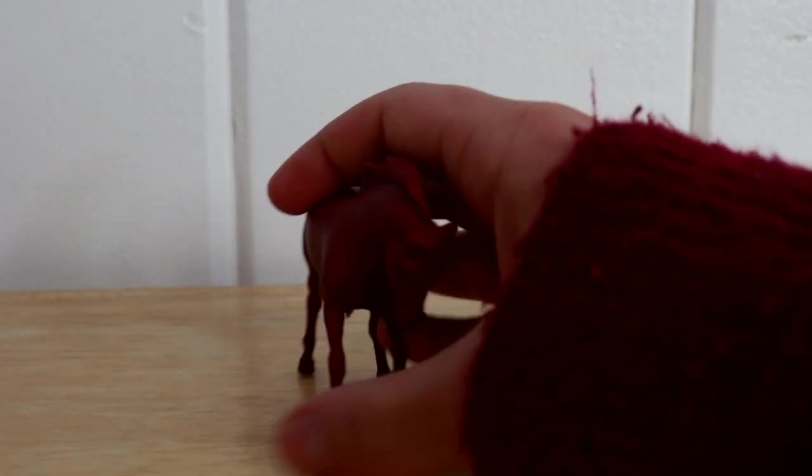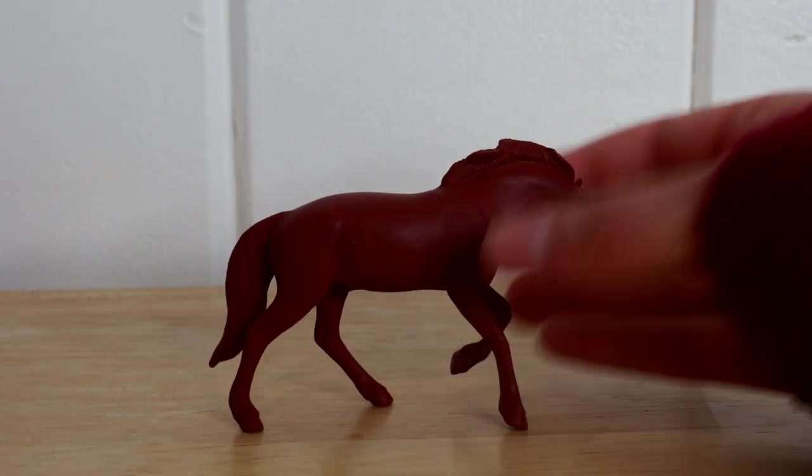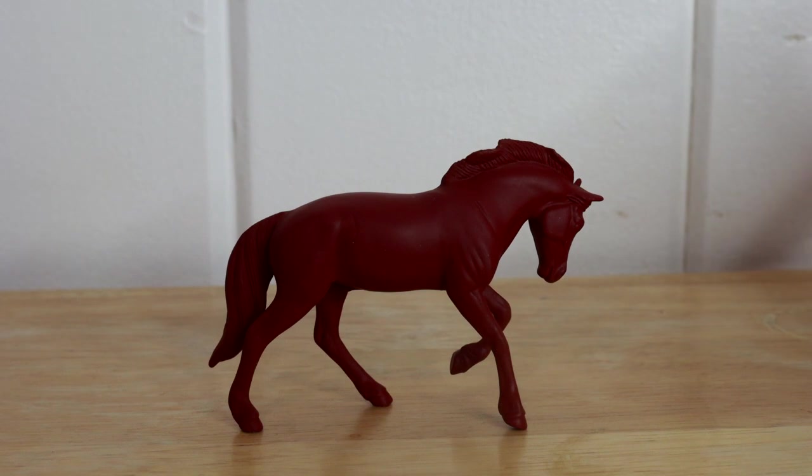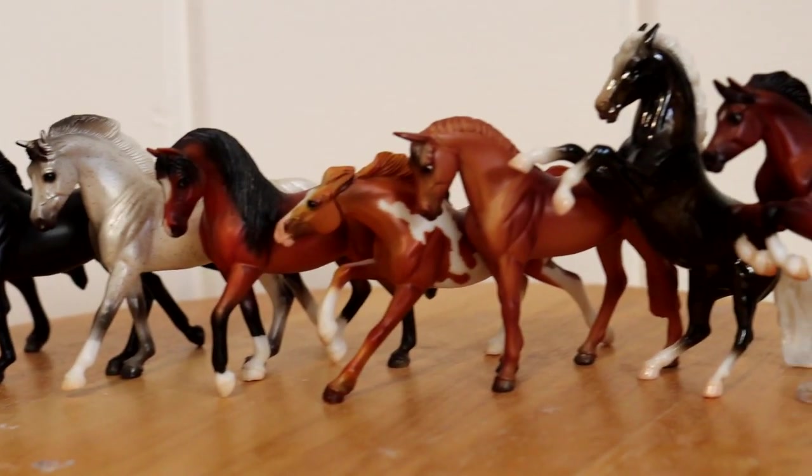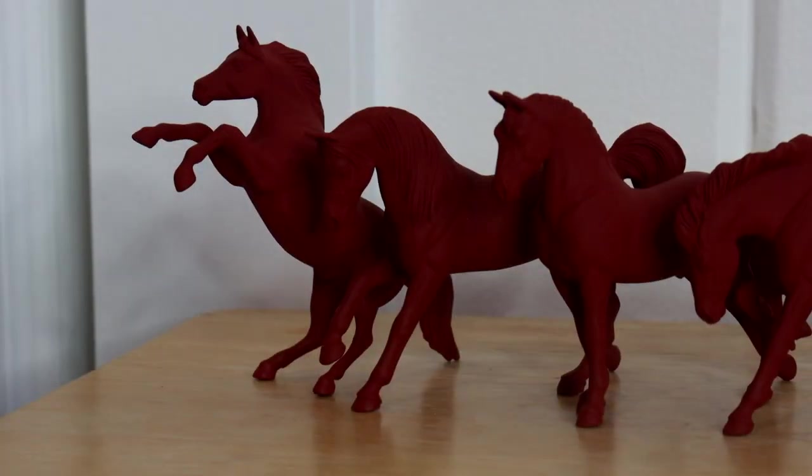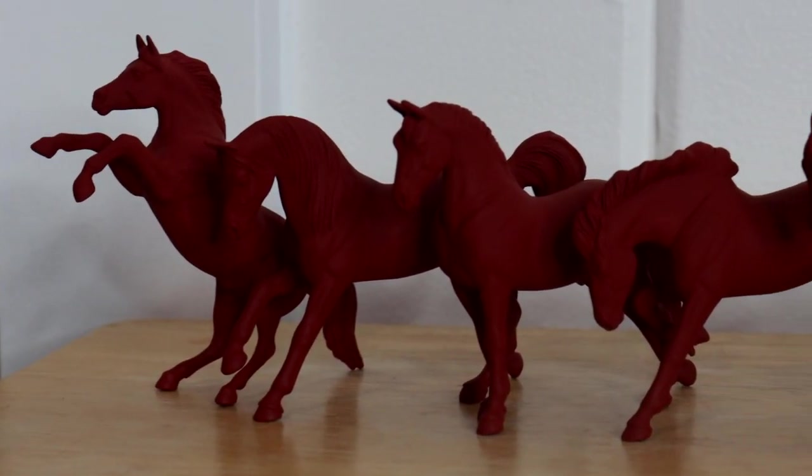In this video, I'm going to be teaching you how to make stablemate switcheroos. A stablemate switcheroo is when you take Breyer stablemate models and switch around legs, heads, manes, and tails to create a new one-of-a-kind stablemate.